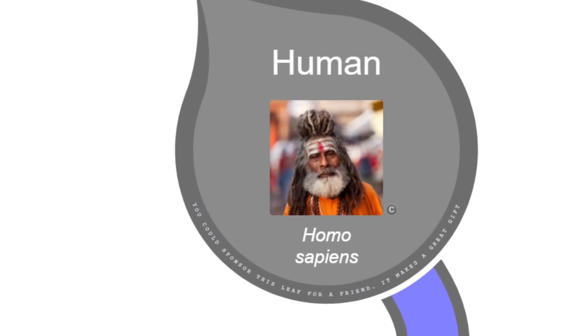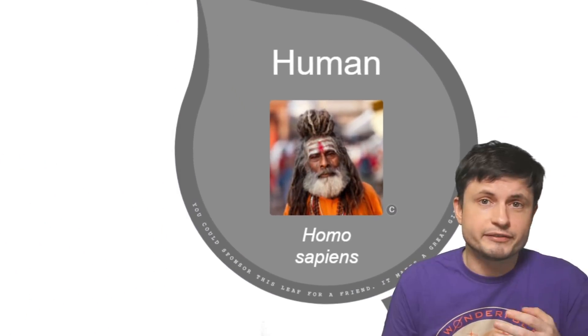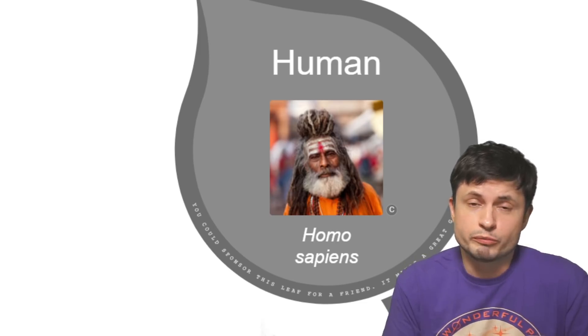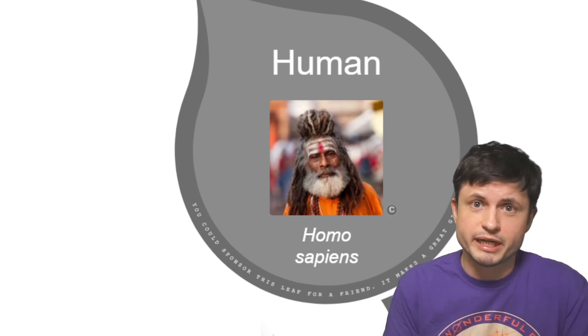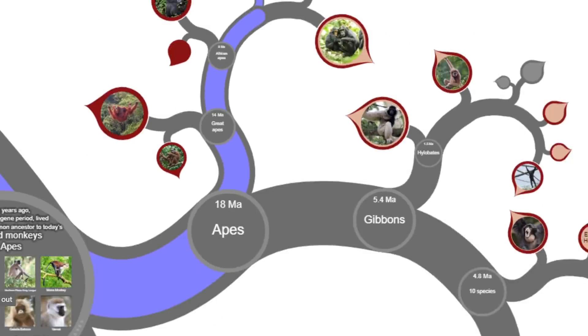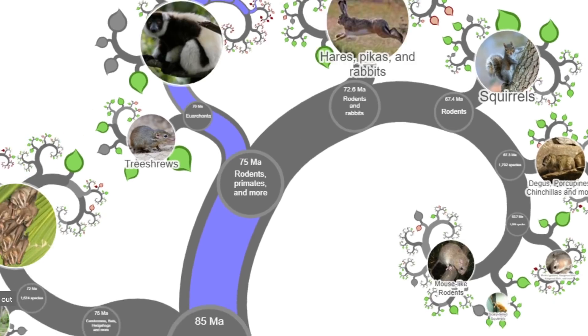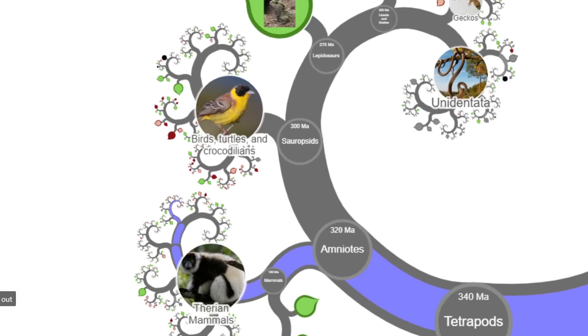And this is just absolutely insane. Every single leaf on this tree, every single leaf stem and every single branch represents a kind of connection of the entire life on our planet. 2.2 million species in this one single tree. And that is just insane.